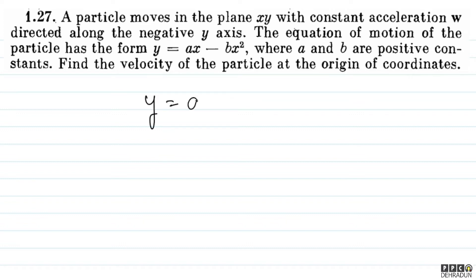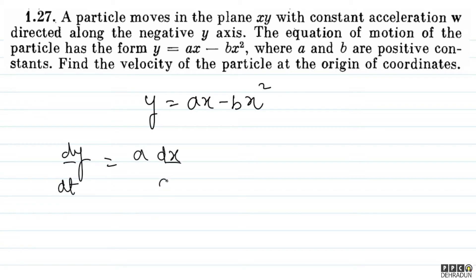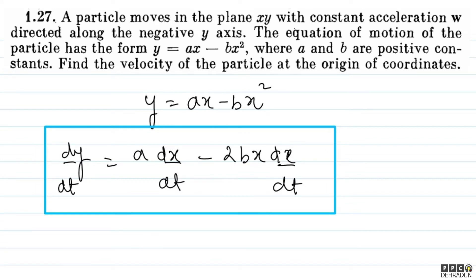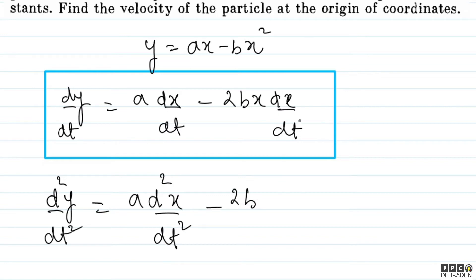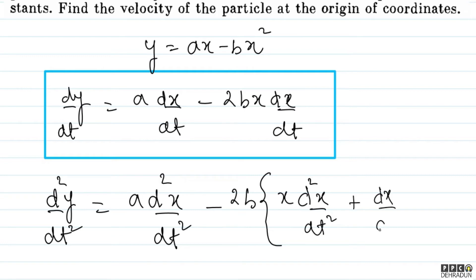Let's think about how to solve this. We are given y = ax - bx². If we differentiate with respect to time, we get dy/dt = a·(dx/dt) - 2bx·(dx/dt). So here we have equations relating dy/dt and dx/dt. Now we differentiate once more with respect to time.